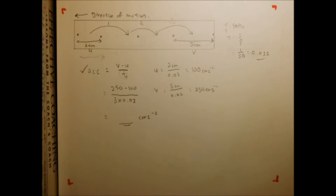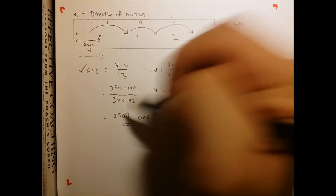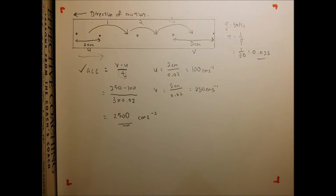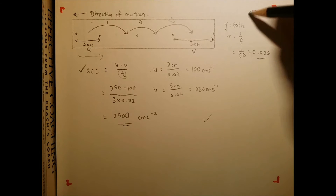Based on my calculator, the answer for this is 2500 cm per second squared. This is a very simple ticker timer, normally in the form of objective questions to find acceleration. This video addresses calculations for ticker timer only — theory and basics will not be covered here. Kindly leave a comment below if you'd like to know more about ticker timer. This would be question type number 1.